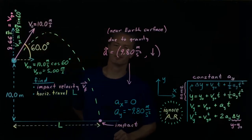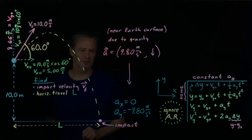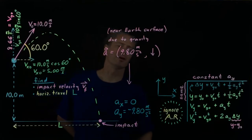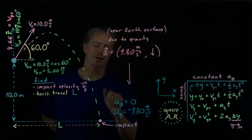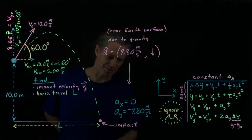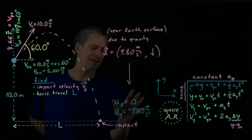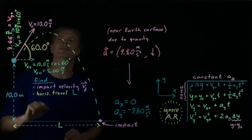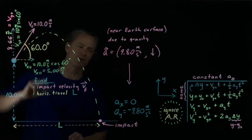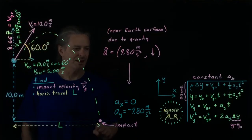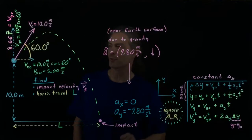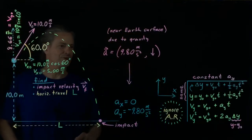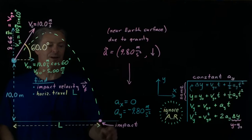One quick comment on our coordinate system: if instead I had chosen down to be the positive y direction, then the acceleration due to gravity would be positive. However, the initial y component of velocity would then come out negative. I chose up as the positive y direction, so the initial y component of velocity is positive and the acceleration is in the negative y direction.